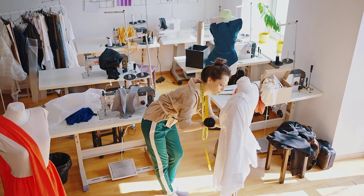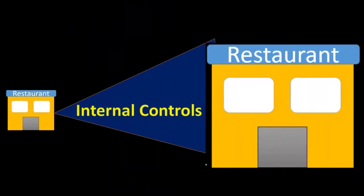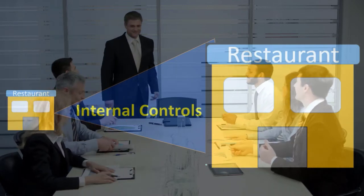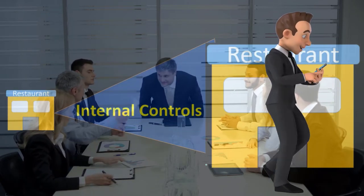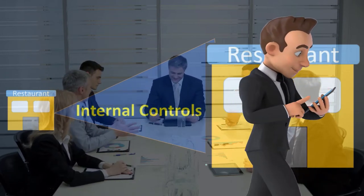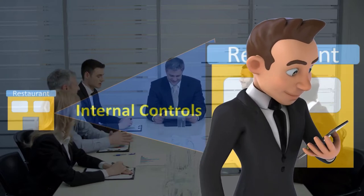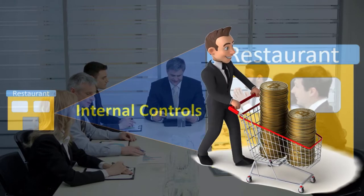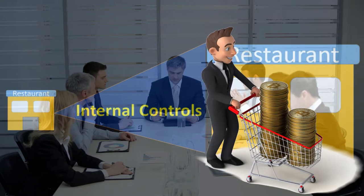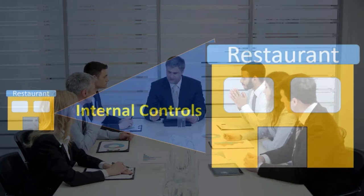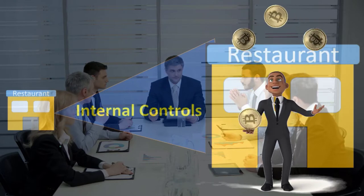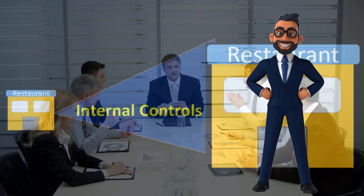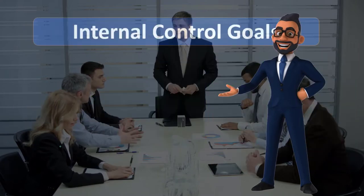A large organization is going to have a lot more decentralization, with more things delegated to different levels of management, requiring internal controls. Also, as a company gets larger, it starts to become more of an entity. People see it as an entity rather than an individual person and can therefore more easily rationalize fraudulent activities. A large organization needs to set up policies to safeguard against fraud and ensure internal control objectives are met.